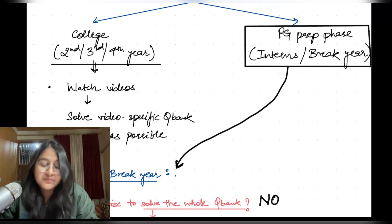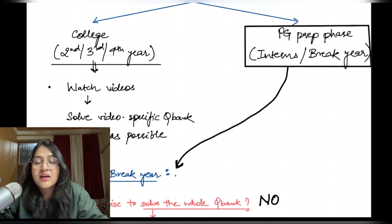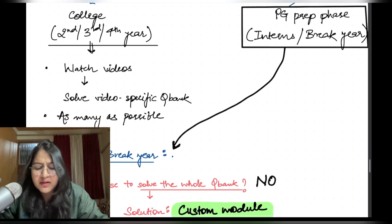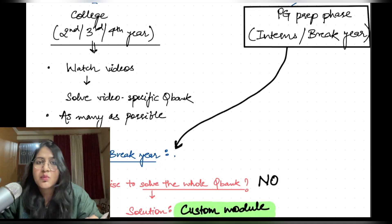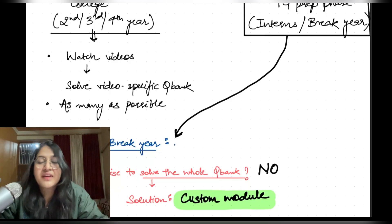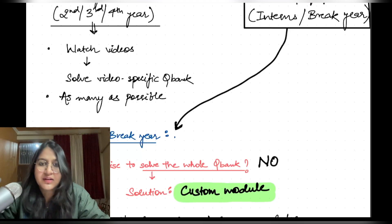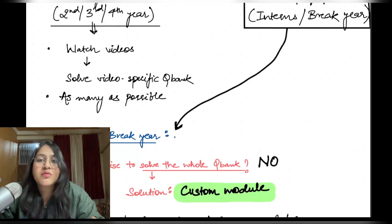The strategy is divided for two kinds of students. For students who are in college right now — second, third, fourth year — it is very simple: watch your videos from whichever platform, then solve that video-specific question bank. For example, if you are doing Obs-Gynae and you did fibroids, come back and solve the fibroid question bank. It is not possible to solve all questions, so solve as many as possible. There is no pressure to solve everything.